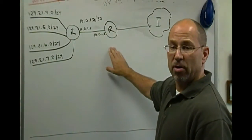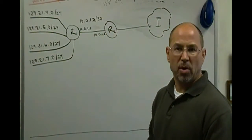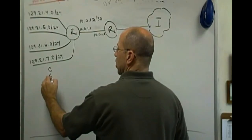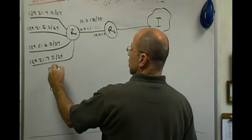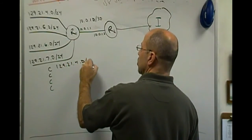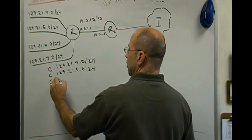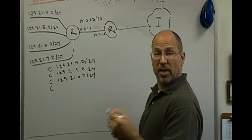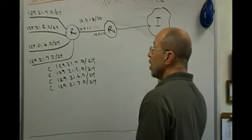So here we've got a couple of routers — router number one and router number two — and to start off, why don't we go ahead and build our routing tables. On router number one we can see that we'd have four directly connected networks downstream. So we'd have — we're doing some RIP examples — the 4.0 network slash 24, the 5 network, the 6 network, and the 7.